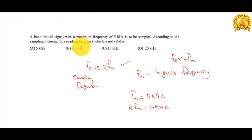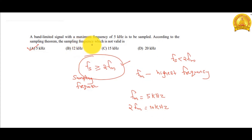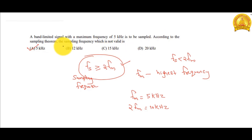The sampling frequency must be greater than or equal to 10 kHz. From the given options: 12 kHz > 10 kHz, 15 kHz > 10 kHz, and 20 kHz > 10 kHz — all satisfy the sampling condition. So options B, C, and D are valid. The sampling frequency which is not valid is option A, which is the correct answer.